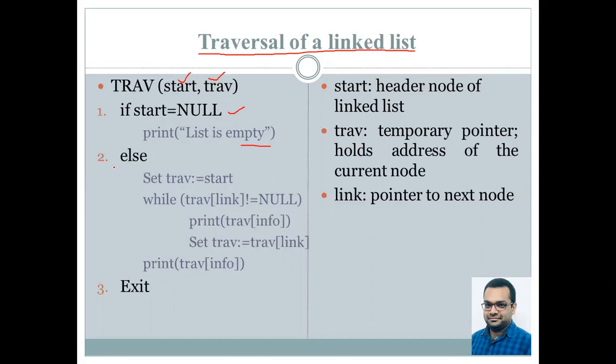If this is not the case, then the control jumps to the else part where we initialize the value of the traversal pointer. Till the time traversal link is not equal to null, we print out the traversal information and keep on incrementing the traversal by setting its value to the successive nodes. That is, traversal equals traversal link.